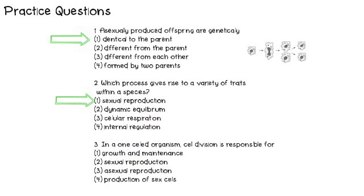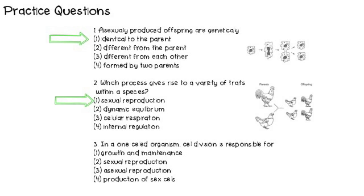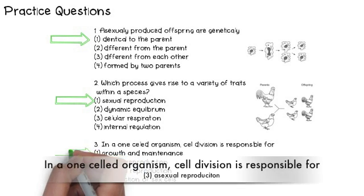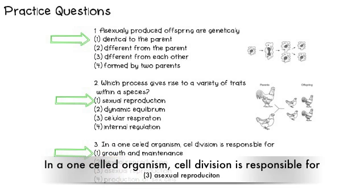Number 2: Which process gives rise to a variety of traits within a species? The answer is sexual reproduction. Number 3: In a one-celled organism, cell division is responsible for — the correct answer is number 3, asexual reproduction.